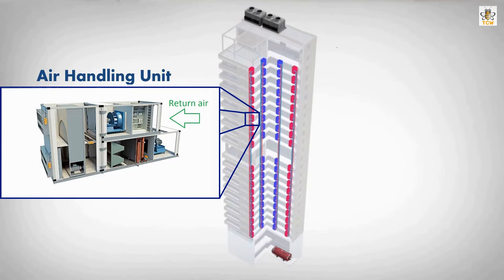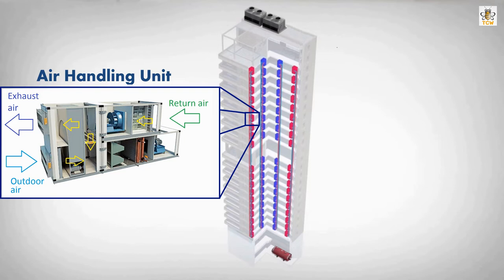A small portion of return air is discharged out of the building — this air is called exhaust air — while most of the return air is recirculated again. The Air Handling Unit then takes some outdoor air and mixes it with the return air.